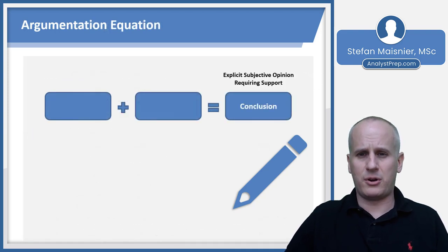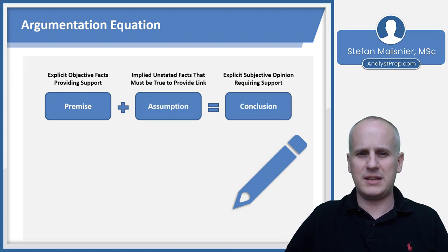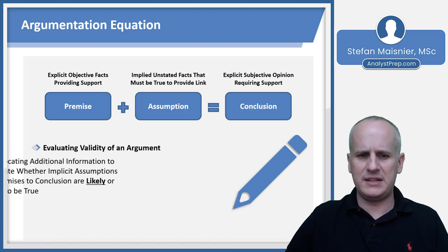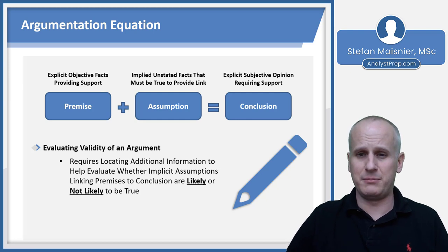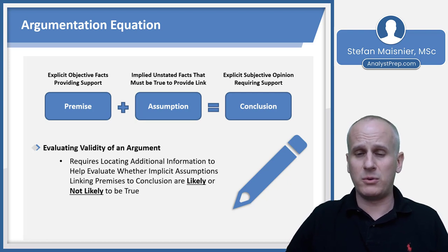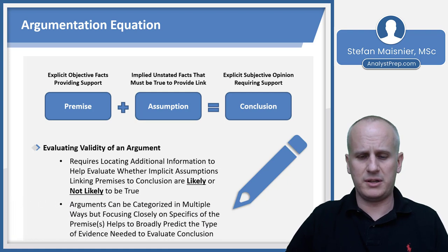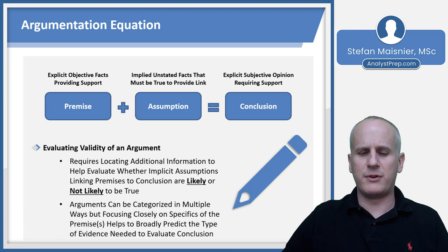Our argumentation equation always leads up to a conclusion, which is your subjective opinion requiring support. You have your premise — your objective facts providing that support — and your assumption, which is the implied unstated facts that must be true to link your premise to your conclusion. When asked to evaluate the validity of an argument, locate additional information to help evaluate whether implicit assumptions linking the premises to the conclusion are likely or not likely to be true. The answer to a question pertaining to that subject can help determine whether the argument's conclusion seems realistic.